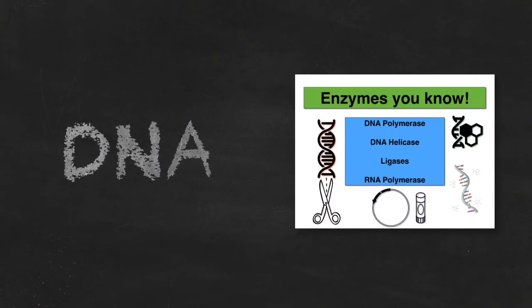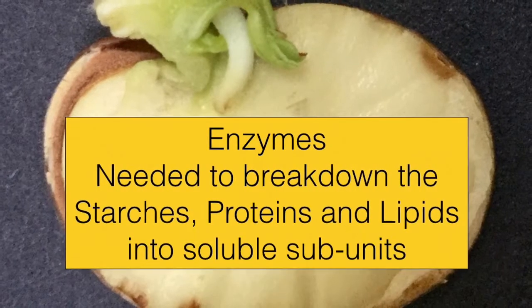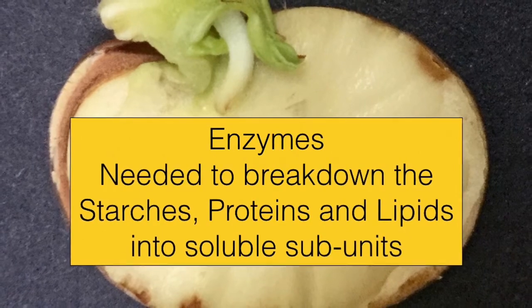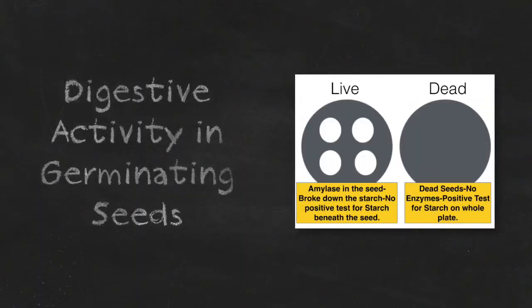That anabolic enzyme, DNA polymerase, is used in constructing DNA. Ligase was an enzyme that you encountered in the chapter on genetic engineering. The chapter on plant reproduction, in particular seed formation, has many links to enzymes. And if you have not already, you will do an experiment to look at the digestive activity in germinating seeds.